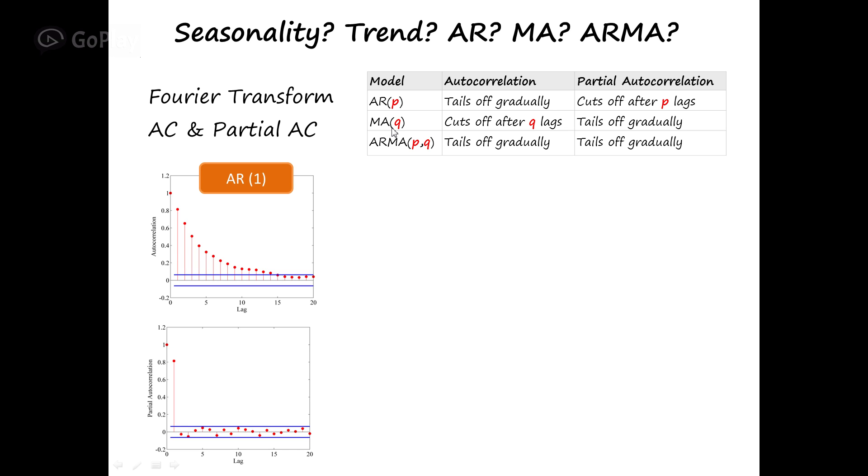For MA, for moving average, it's the other way. If the order is Q, autocorrelation cuts off after Q lags but partial autocorrelation tails off gradually. Here's an example, MA with the order of 1. As you can see, autocorrelation cuts off exactly after 1 lag.